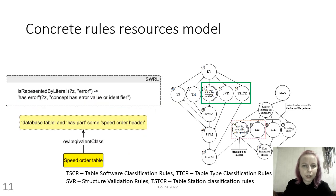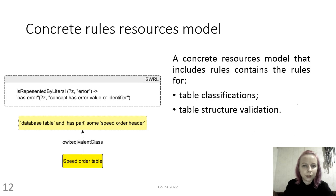Rules for validation — including rules for validating the structure of tables and classifying tables by type, program, and station — are formalized as ontologies of a concrete resources model, presented in the diagram of the procedure for forming a modular ontology of the railway infrastructure.